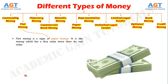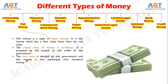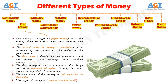Number 2: Fiat Money. Fiat Money is a type of paper money which has a face value more than its real value. The actual value of the money is worthless. It is accepted by the people on the order of the government. The face value is decided by the government and the money is not exchanged into standard money. The fiat money is used as a medium of exchange and as a standard of value. It may be paper money or any kind of commodity, and this type of money is issued across the world.